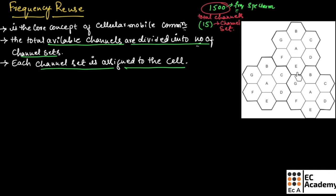We are having different clusters and each cluster is having 7 cells from A to G. Cells with the same name can use the same channel set. As you can see, we are having cell A here, and A and A — these cells can use the same channel set. This is nothing but frequency reuse.